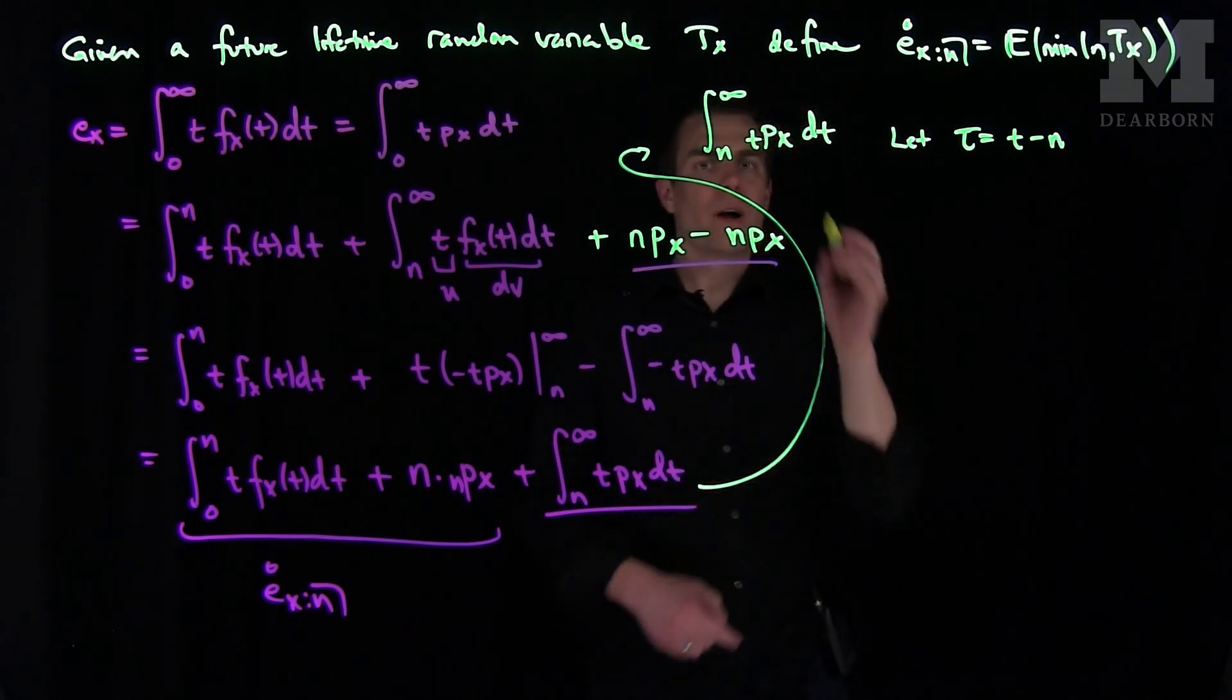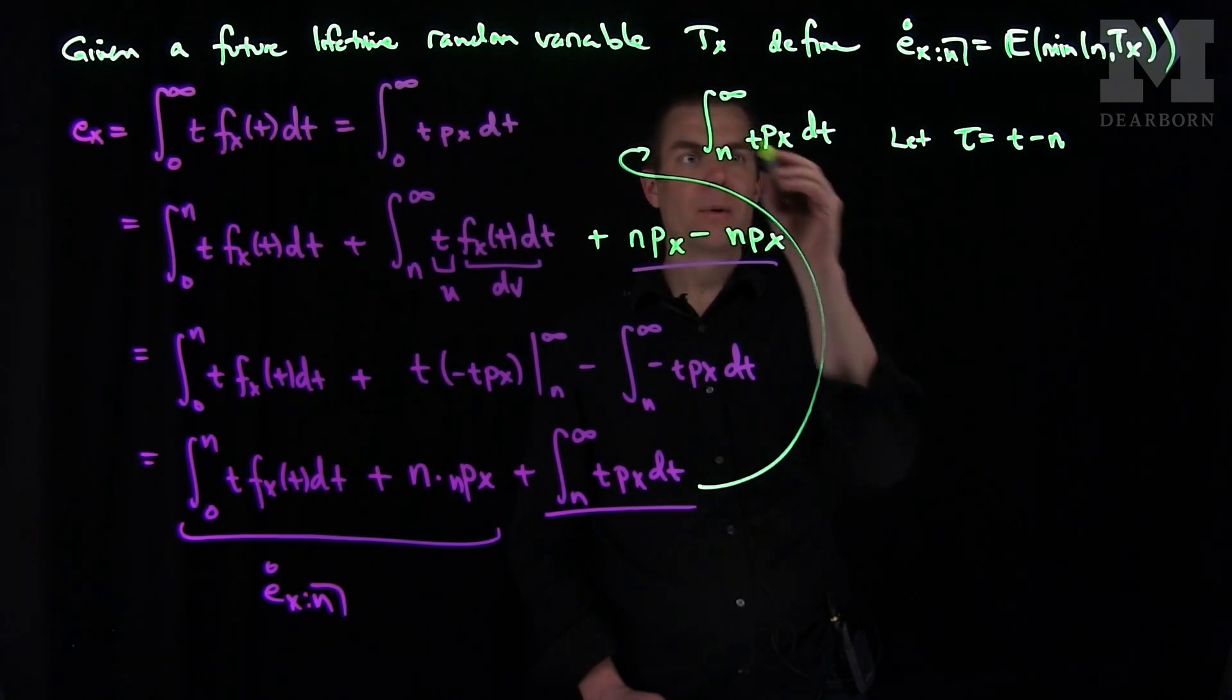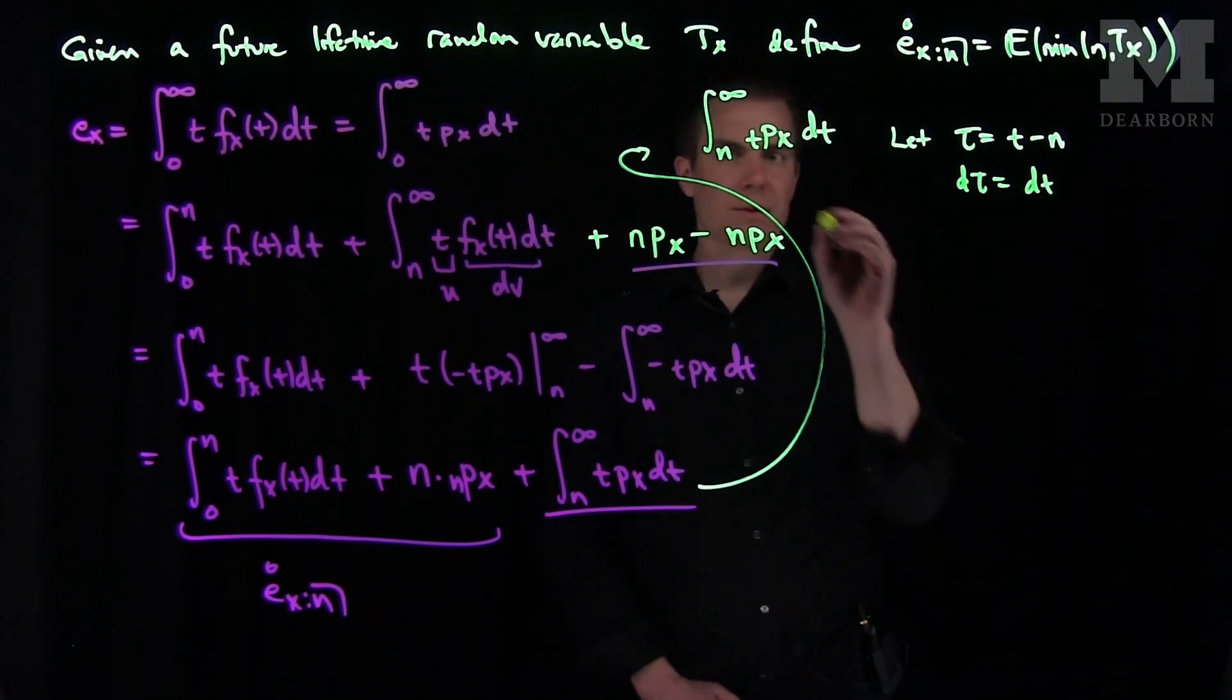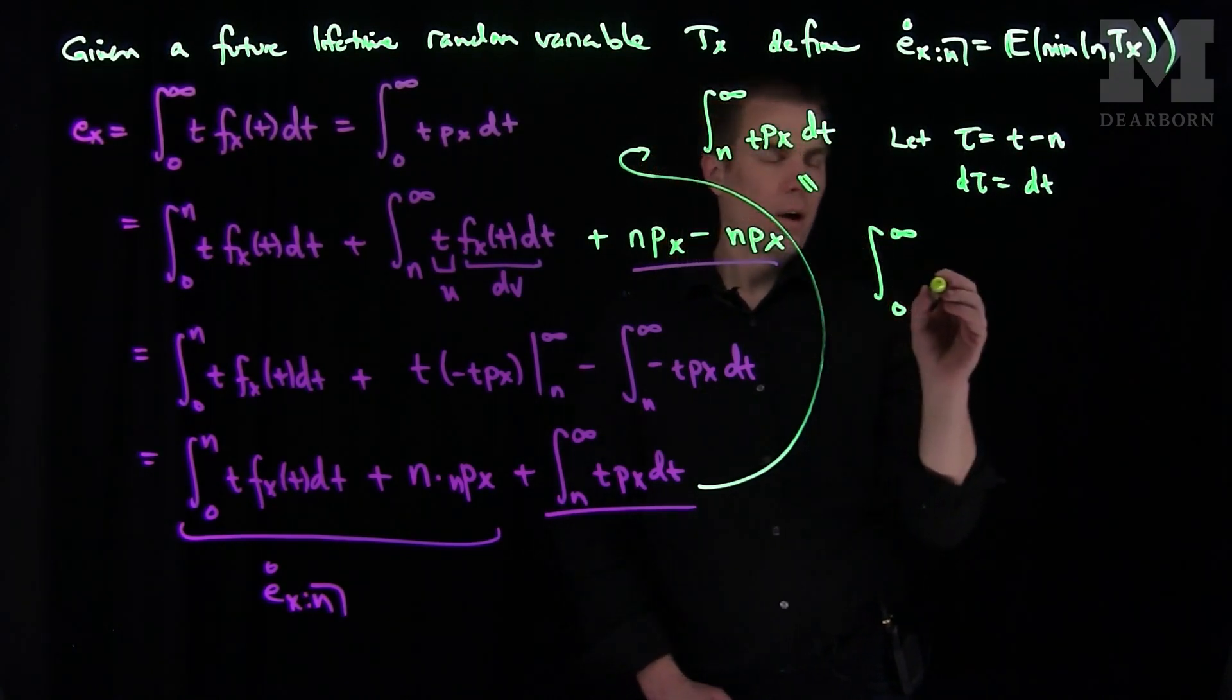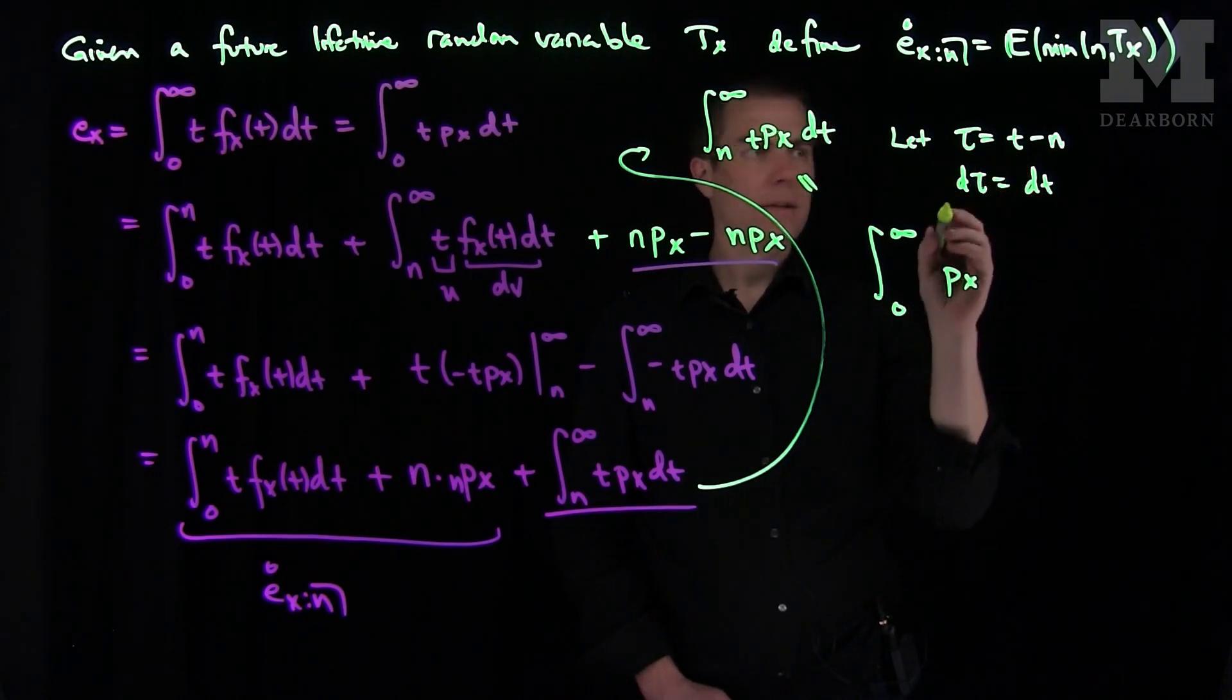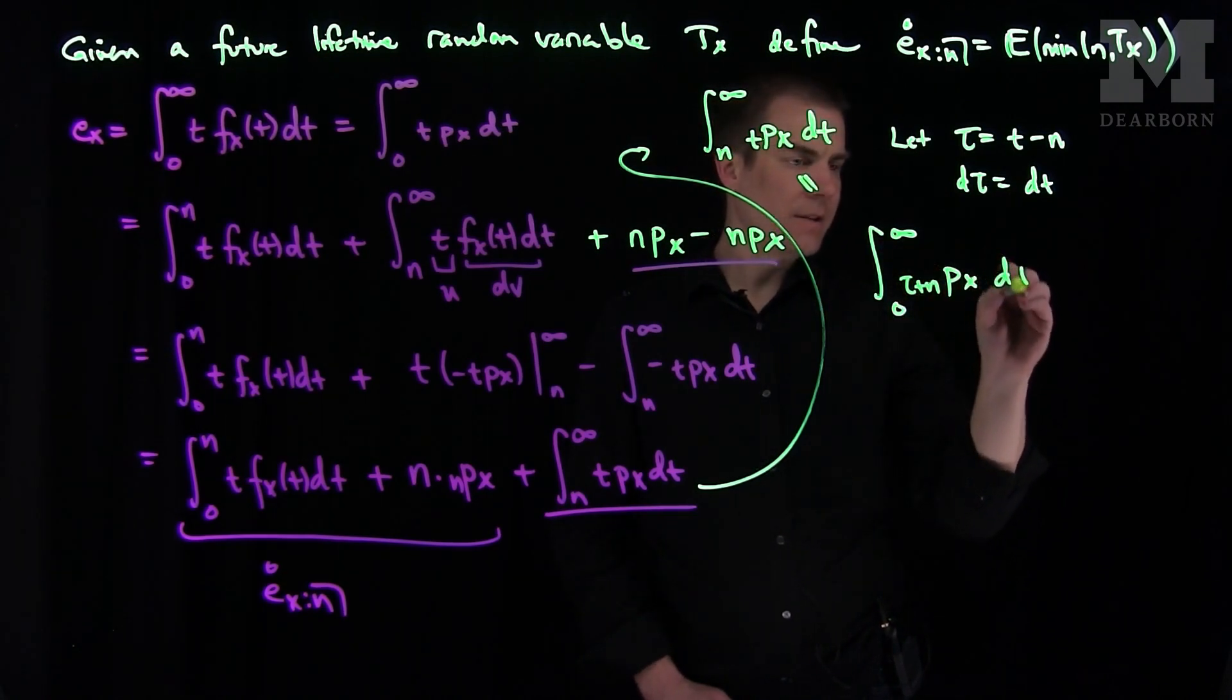Well now, when t is equal to n, tau is equal to 0. And when t is equal to infinity, tau is equal to infinity. My dtau is dt. And so this integral will turn into the integral from 0 to infinity of px. And then I will have a t, which will be a tau plus n, and then a dtau.